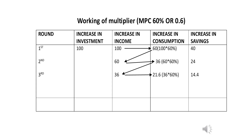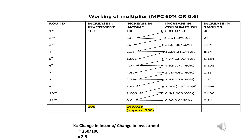Similarly, you can complete the table by following the same procedure — the increase in consumption from the previous round becomes the increase in income for the next round, and you again calculate 60% of that to find the next round's consumption. Using the constant value of MPC as established in the assumptions, you can complete the entire table and find out the value of the multiplier.